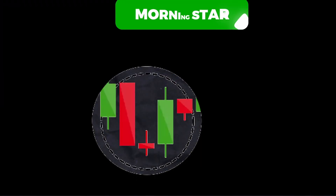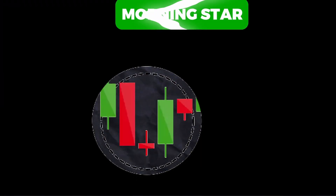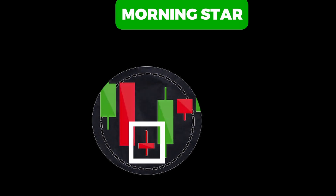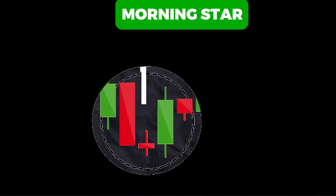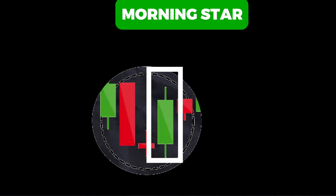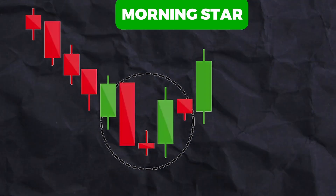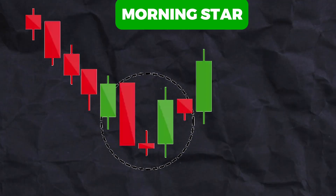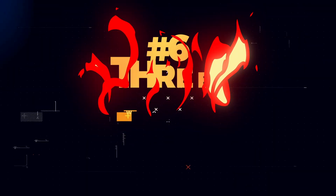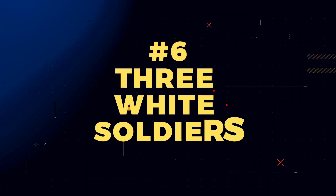The morning star is a three-candlestick pattern indicating a bullish reversal. It consists of a short-bodied candle — the star — between a long red and a long green candle. The star's gap from the surrounding candles suggests a market turnaround.